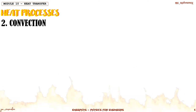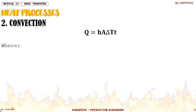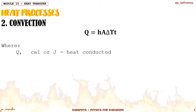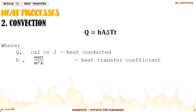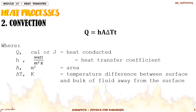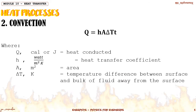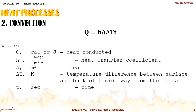Under convection, the heat transferred can be solved using the equation Q = H·A·ΔT·t. Q is measured in calories or joules. H is the heat transfer coefficient measured in watts per meter squared kelvin. A is the area. ΔT is the temperature difference between the surface and the bulk of the fluid away from the surface. T is the time in seconds.